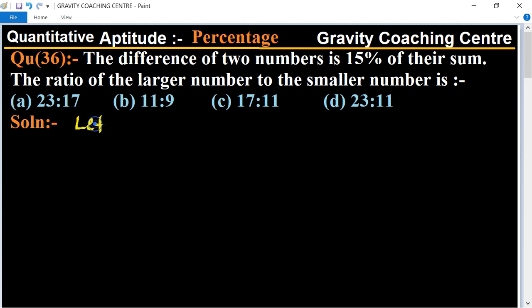Let the two numbers be x and y. According to the question, the difference of two numbers, x minus y, equals 15% of x plus y, their sum.